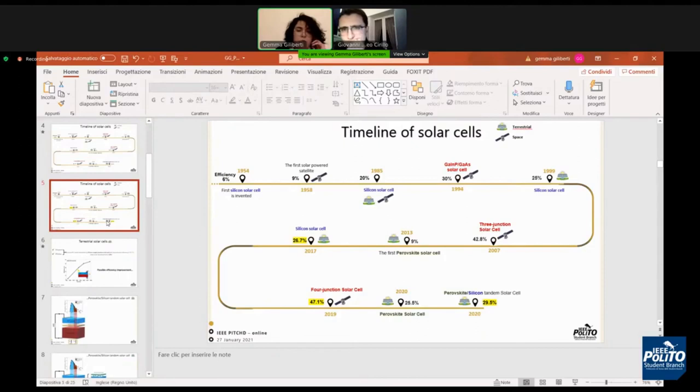But in the future, if the manufacturing costs will be lower, and if we are able to use, for example, the material in multi-junction solar cells, maybe we can arrive to this efficiency.